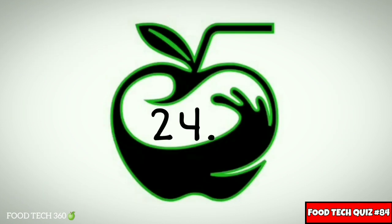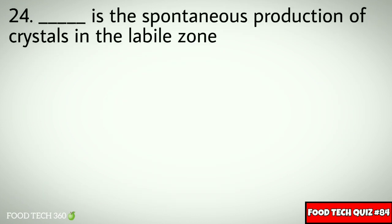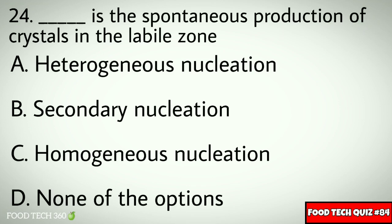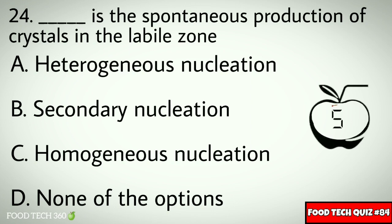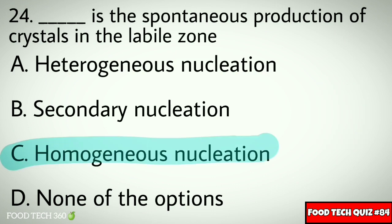Question number 24: Dash is the spontaneous production of crystals in the labile zone. Options: A. Heterogeneous nucleation, B. Secondary nucleation, C. Homogeneous nucleation, D. None of the options. Correct answer: C. Homogeneous nucleation.